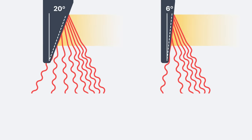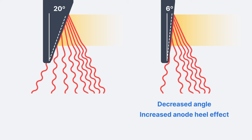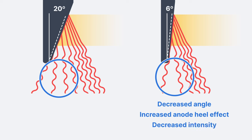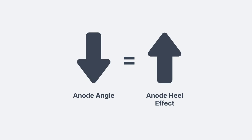A few variables can actually change the extent of the anode heel effect — in other words, the change in beam intensity across the beam isn't always the same. Here's one example: decreasing the anode angle, making it steeper or smaller, increases the anode heel effect. This is because more x-rays get absorbed in the anode and the beam intensity on the anode side decreases. You can actually see that happening: when we decrease the anode angle from 20 degrees to 6 degrees, an increased number of x-ray photons get absorbed in the anode. So there is an increased difference in intensity between the anode side and the cathode side. The relationship between anode angle and heel effect is inverse — as the anode angle decreases, the anode heel effect increases, meaning there will be an increased difference in intensity across the x-ray beam.